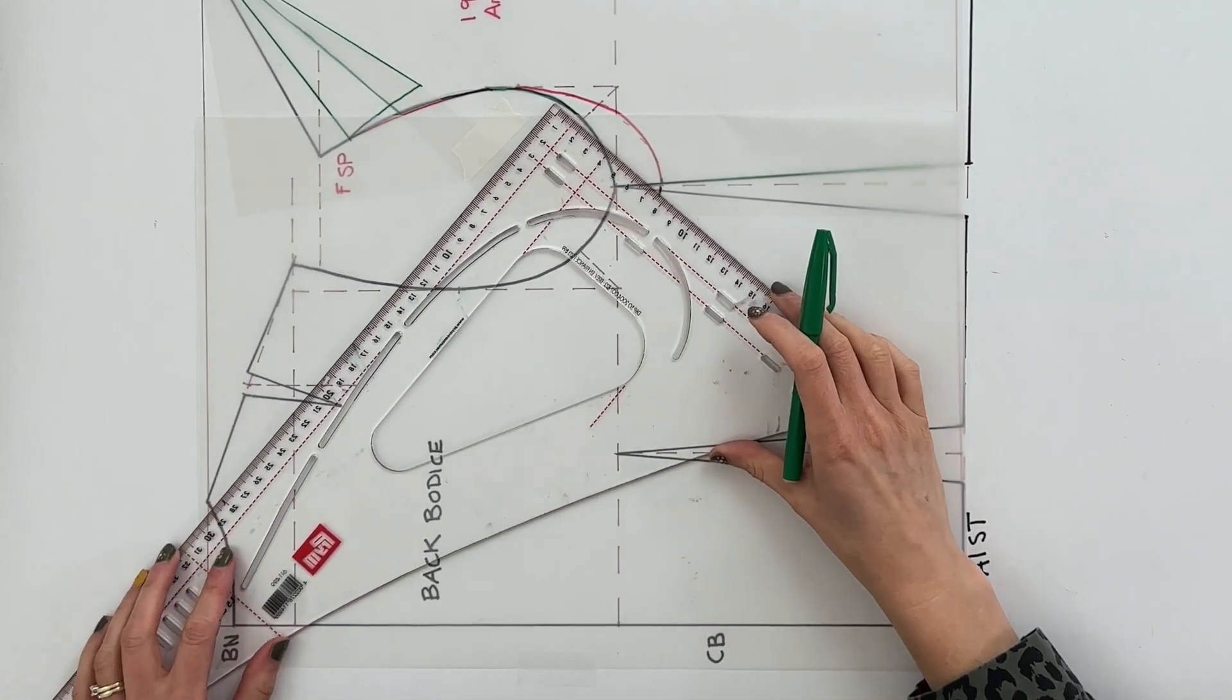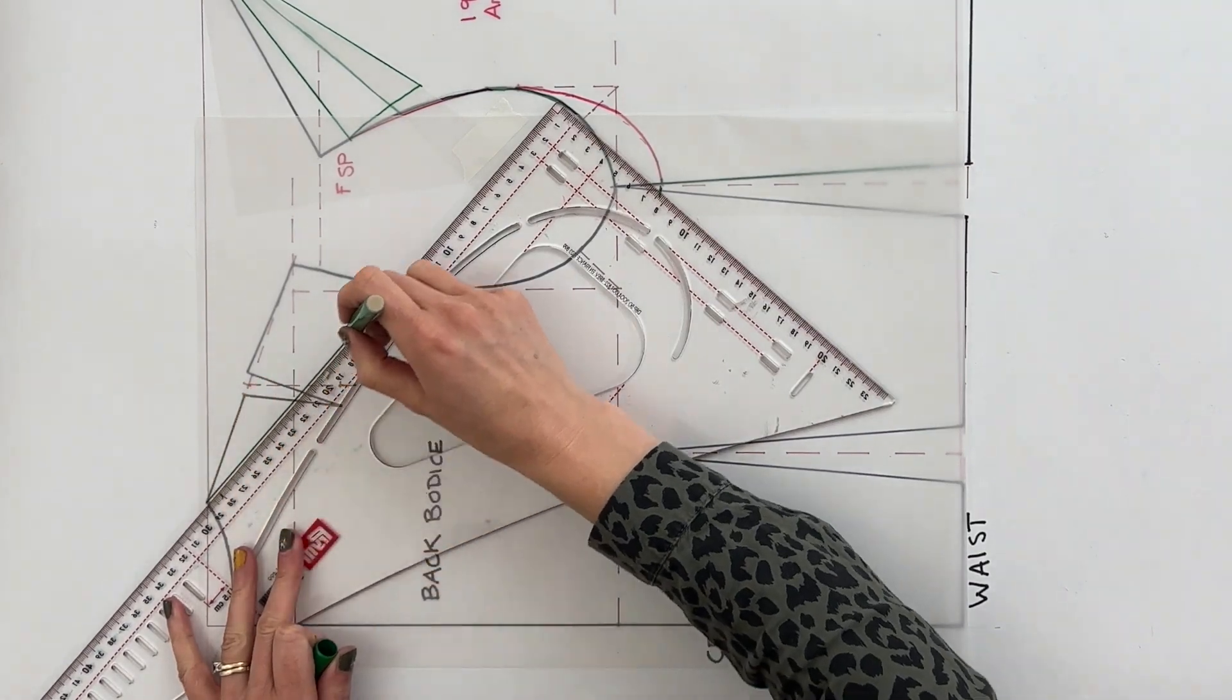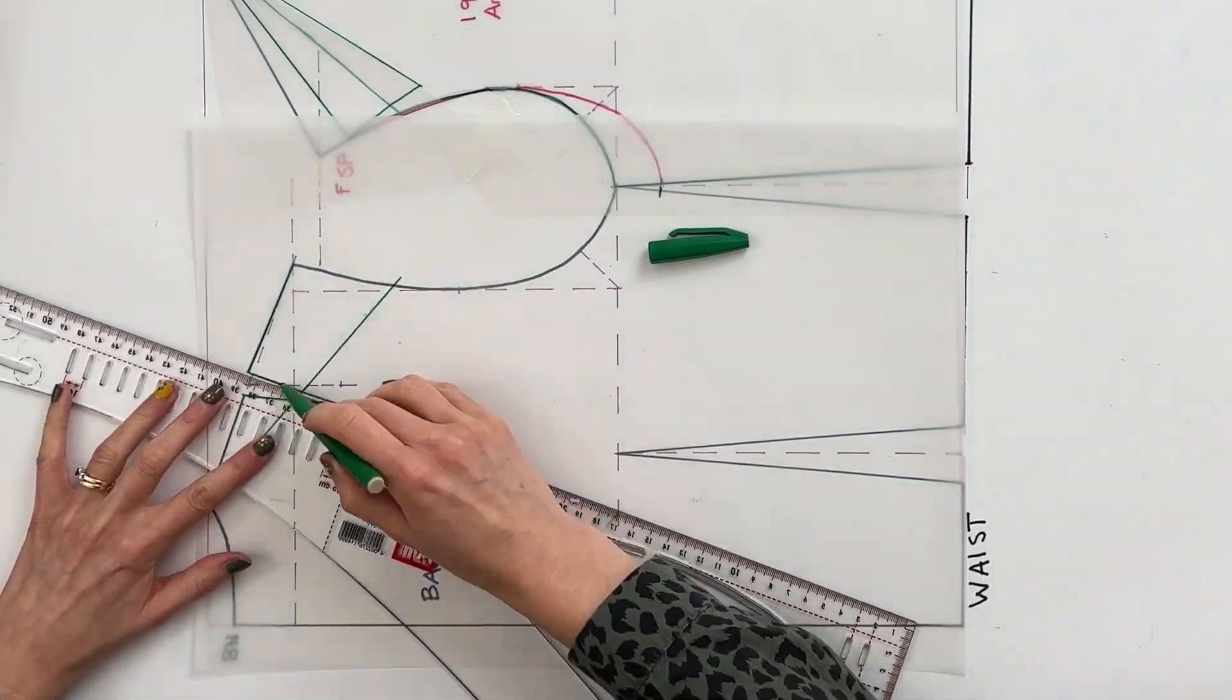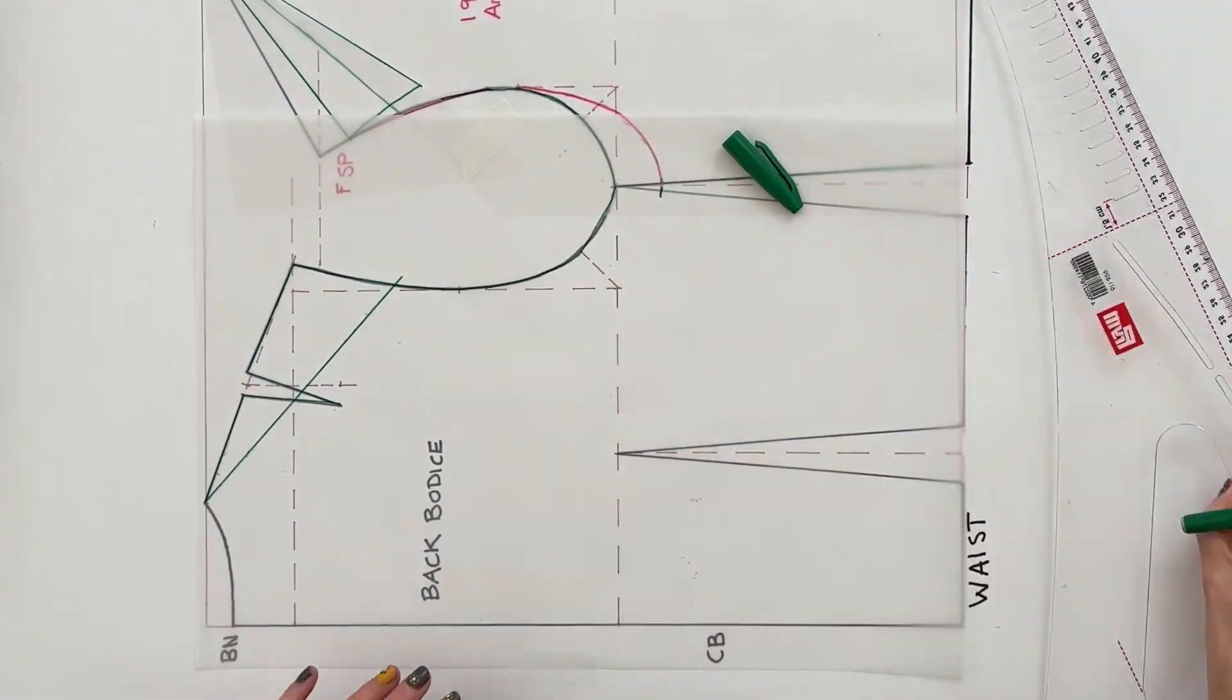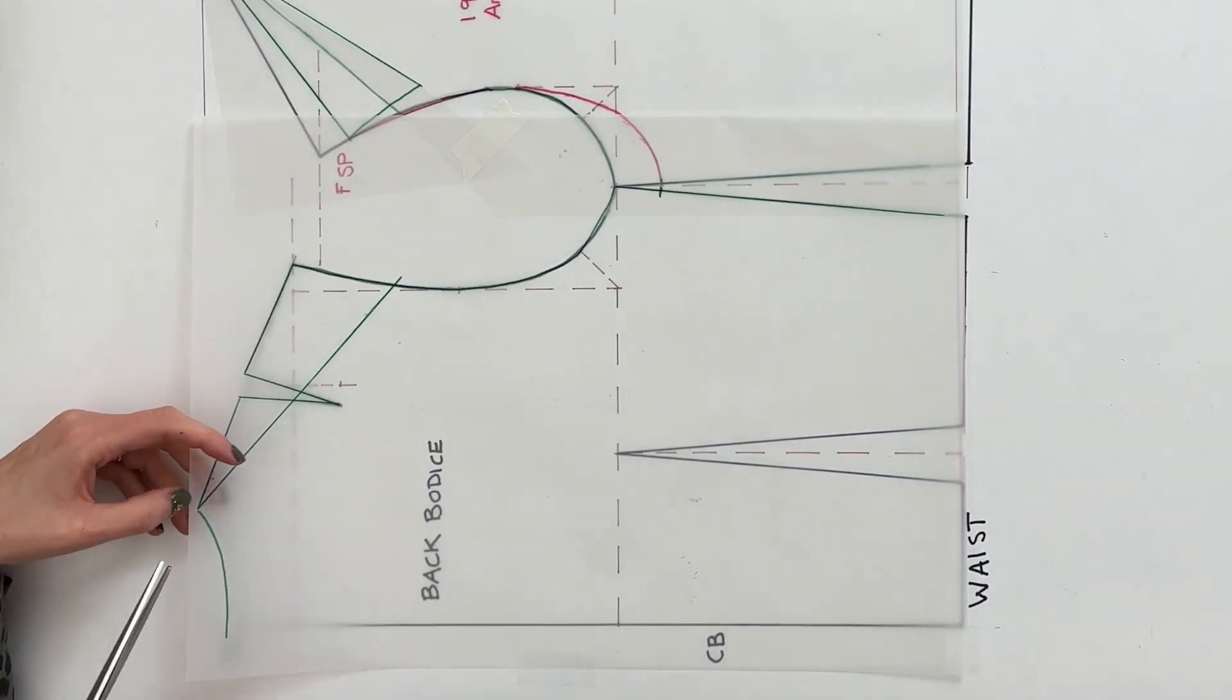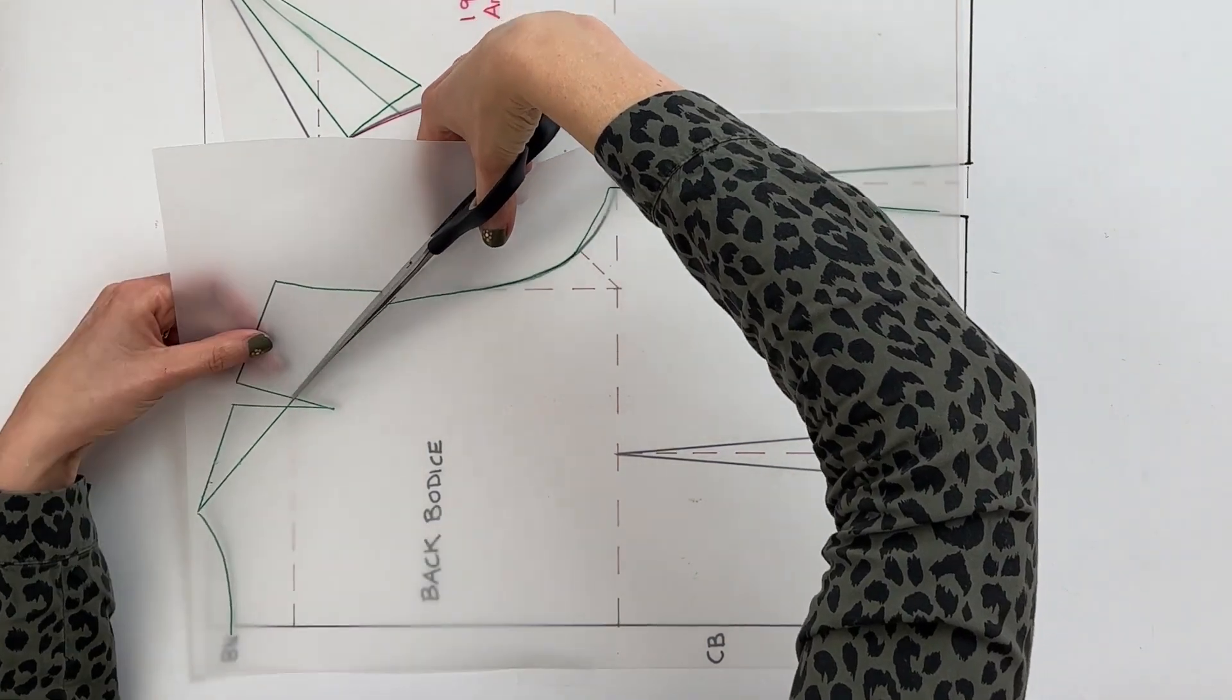Okay so working to our back bodice again we're just going to draw a nice slash line from our back neck point across to the armscye. Draw in your shoulder and the dart and of course your original armscye. We then want to snip along just a little notch at that point to the neck point and then snip along this long line here.